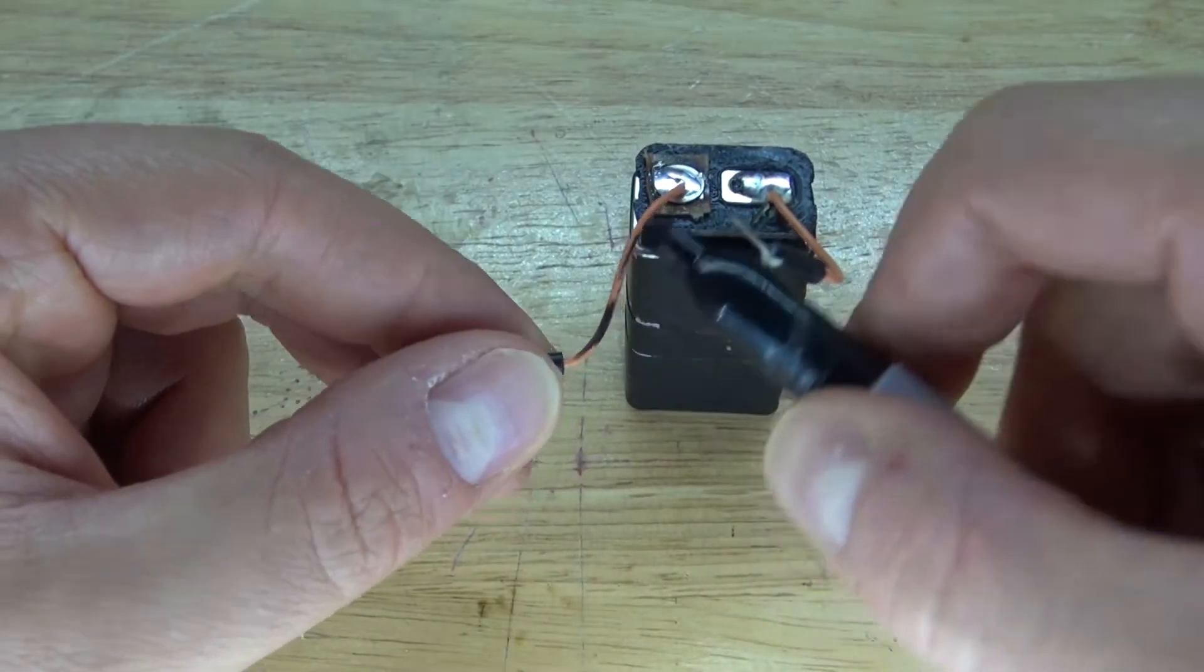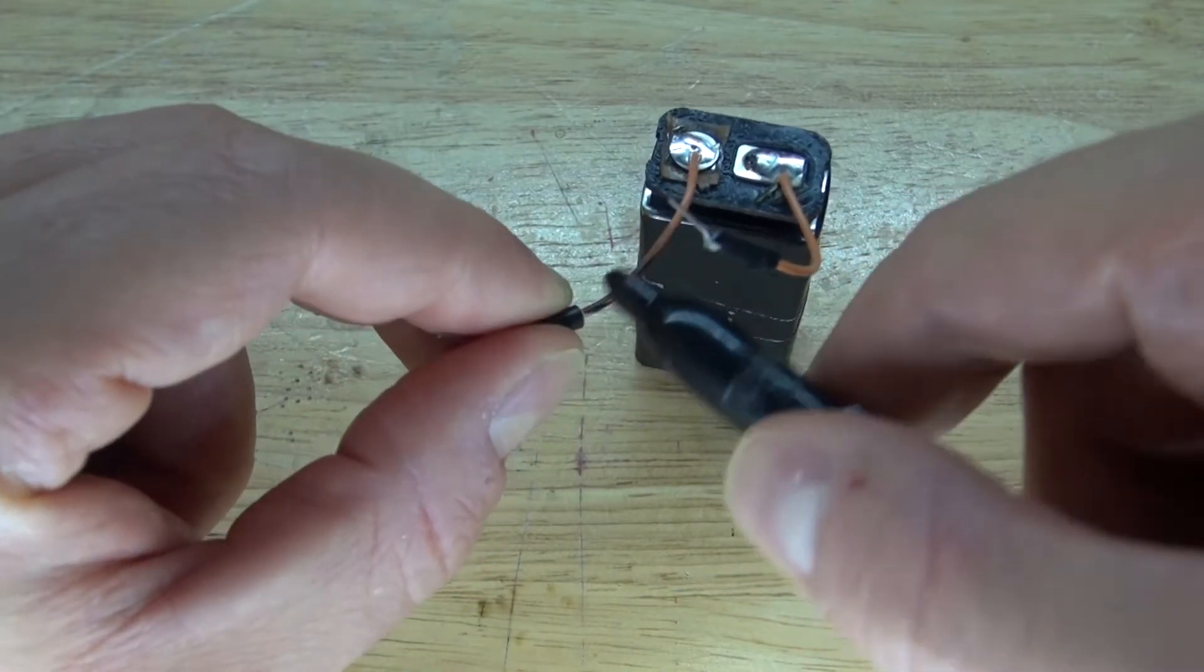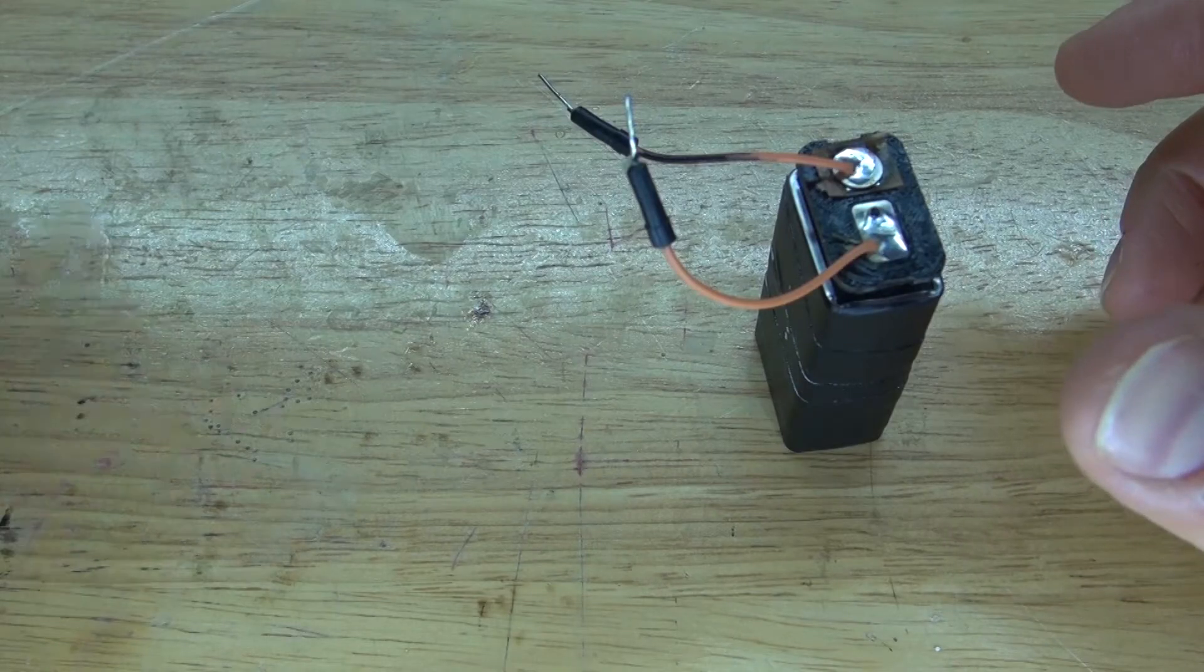Next I'm going to take a permanent marker and blacken this wire so that I know that this wire is negative. And now let's go ahead and test it out.